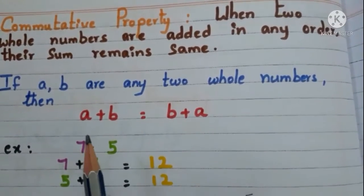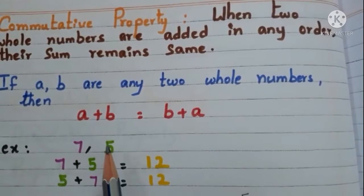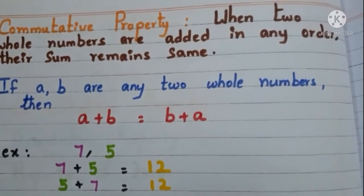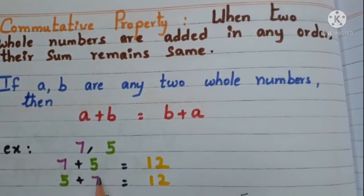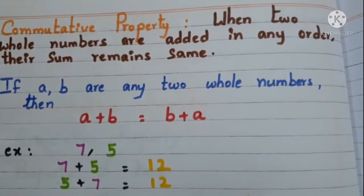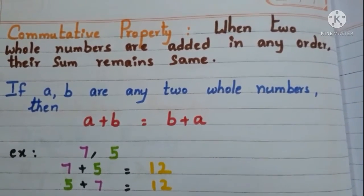Take two whole numbers, 7 and 5. First add 7 and 5. The sum is 12. Now change the order. Add 5 and 7. Here also the result is 12. Even though we changed the order the sum remains same. This property is known as commutative property.